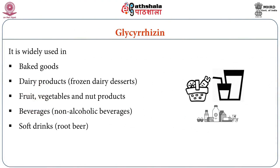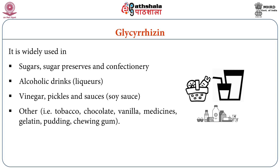The next additive is glycerizing. It is widely used in baked goods, dairy products especially frozen dairy desserts, fruit, vegetables and nut products, certain beverages especially non-alcoholic beverages, soft drinks including root beer, sugar preserves and confectioneries. It is also used in alcoholic drinks generally known as liquors, and is also applied in vinegar, pickles and sausages, especially soya sauce.